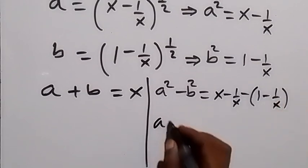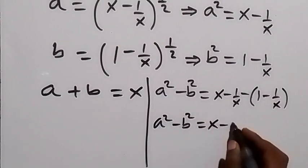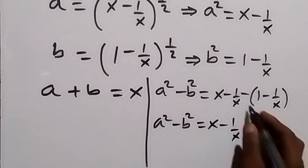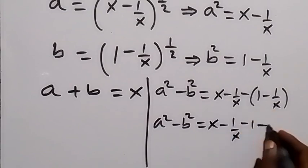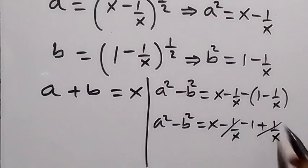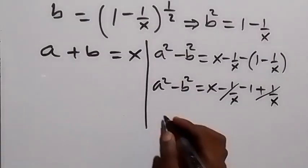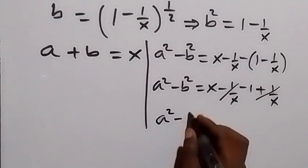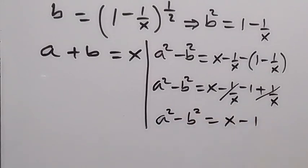We have a squared minus b squared equals x minus 1 over x, then minus the bracket which gives minus 1 plus 1 over x. The minus 1 over x and plus 1 over x cancel, and we are left with a squared minus b squared equals x minus 1.